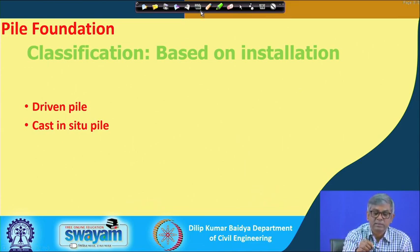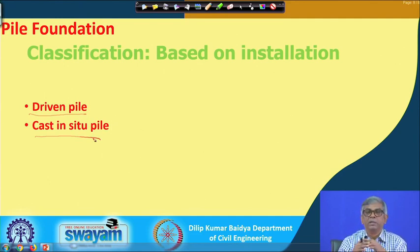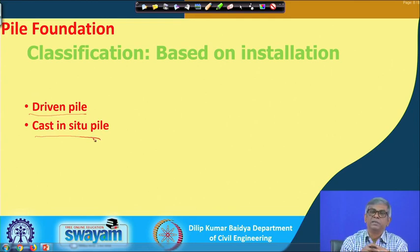Classification based on installation method gives two main types: driven pile and cast-in-situ pile. Driven piles include timber and steel piles driven as-is, or precast concrete piles driven after factory casting. Cast-in-situ pile generally means concrete pile where a drilled hole is made and then concreted in place.